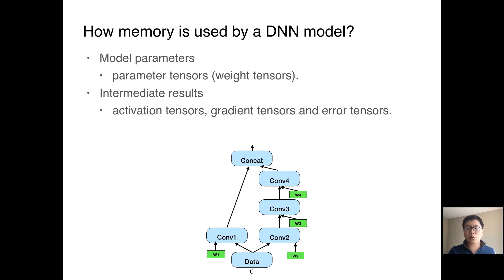The second use case is the intermediate results such as activation tensors, gradient tensors, and error tensors. The yellow rectangles in this dataflow graph are the activation tensors. They are created by some operators. In our example, the operators include convolution, concatenation, and data.